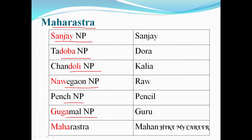These are the national parks for Maharashtra state. I have a code word, so the code word is important. Please note the code word. For Sanjay National Park, the code word is Sanjay. Next, Tadaba National Park — the code word is Dora. And Chandoli National Park — code word is Kaliya.